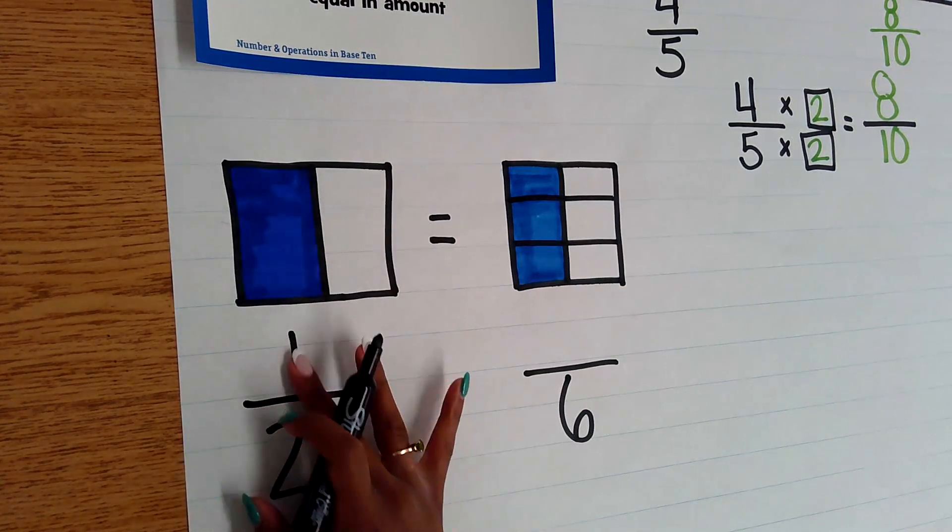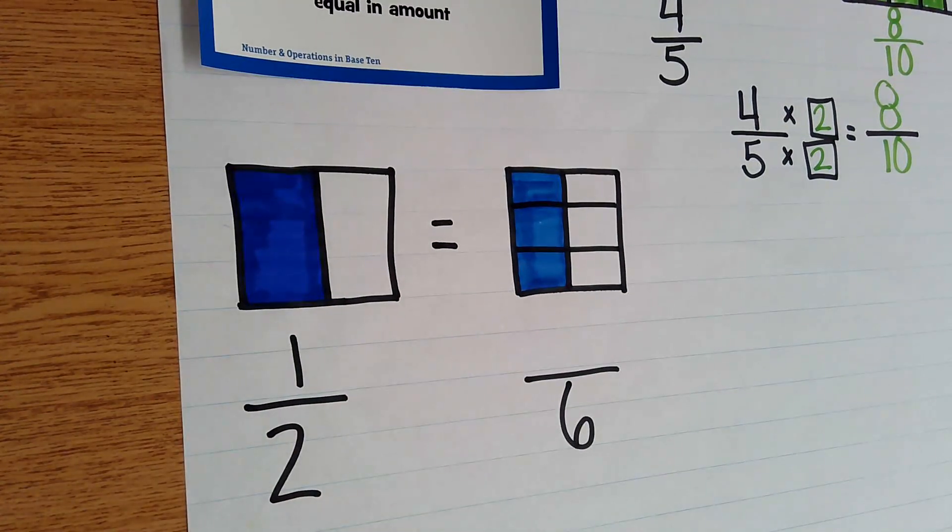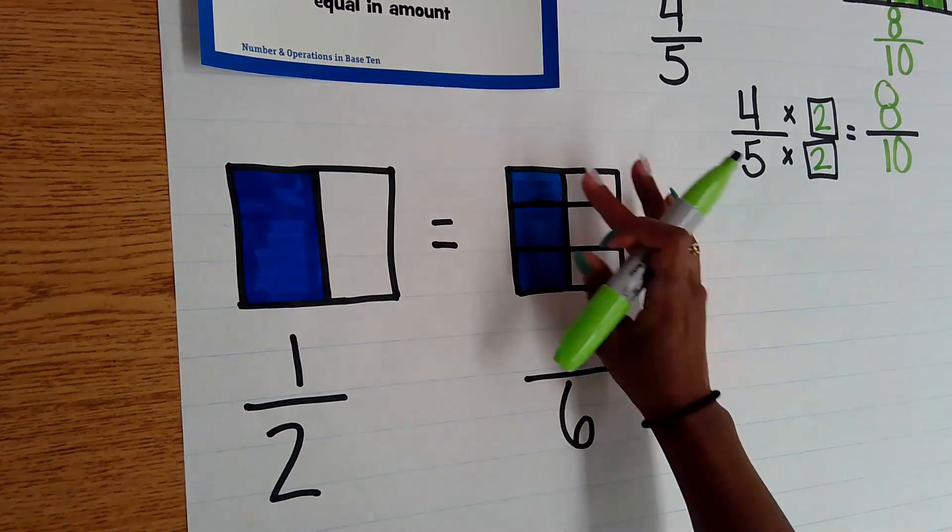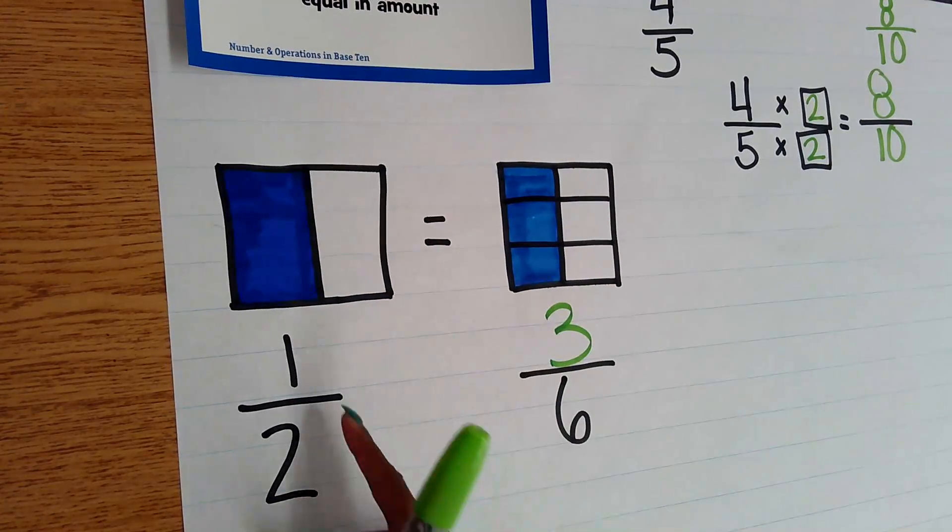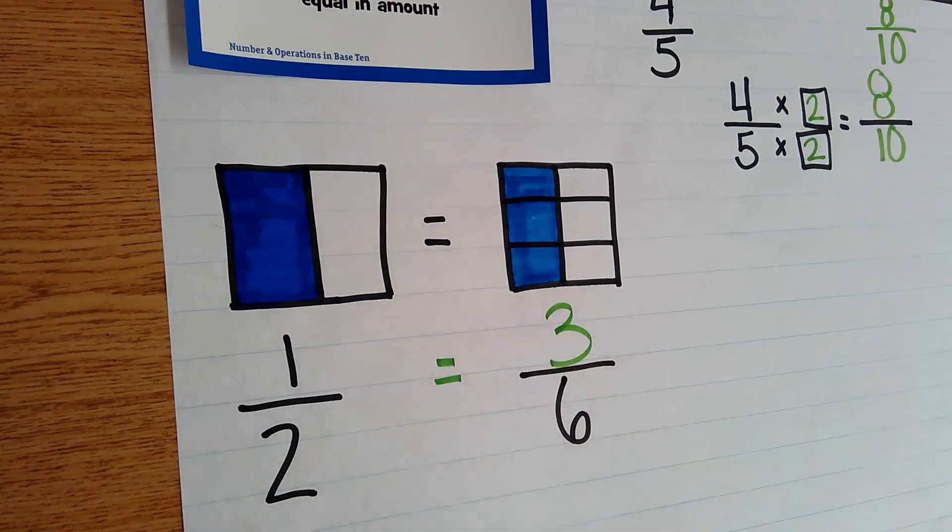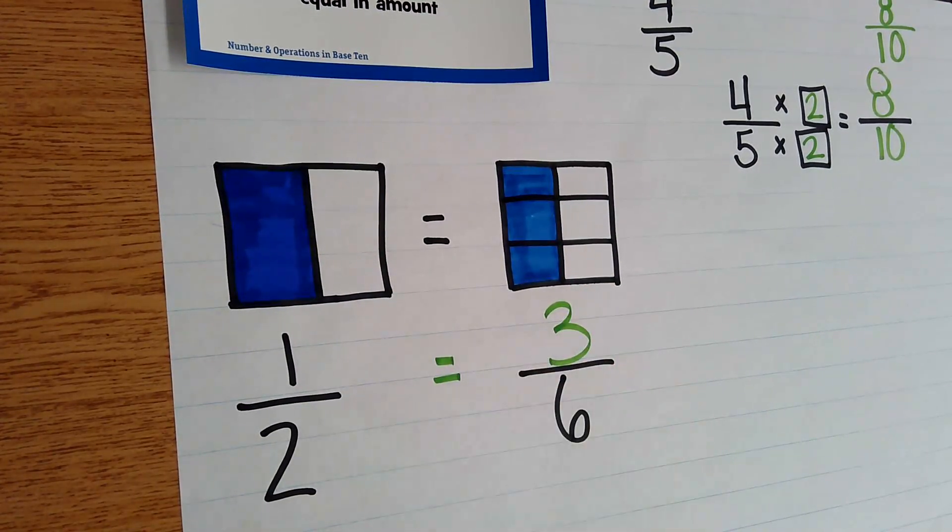So now that I have my one half, I have another equivalent fraction, but I need to count my numerator. So I have one, two, three, six. This means that one half is equal or equivalent to three sixths.